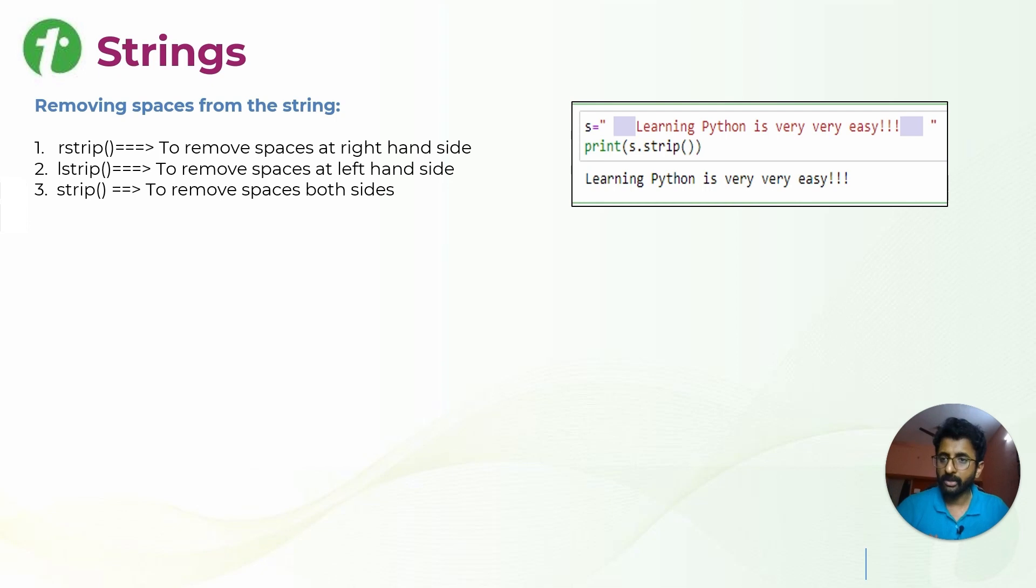To remove the spaces from the string, you can use rstrip, lstrip and strip. Rstrip will remove the right side spaces, L will remove the left side spaces, and strip function will remove all the spaces. See here there are no spaces in the outputs.